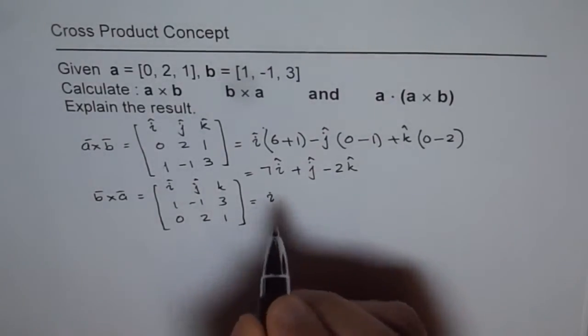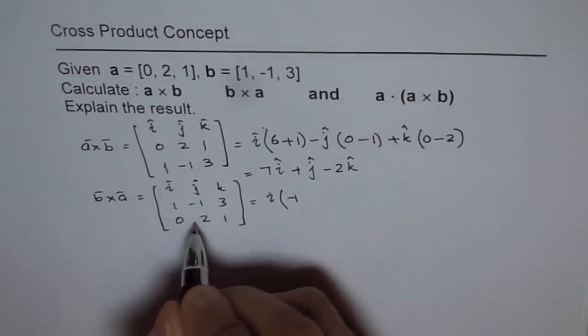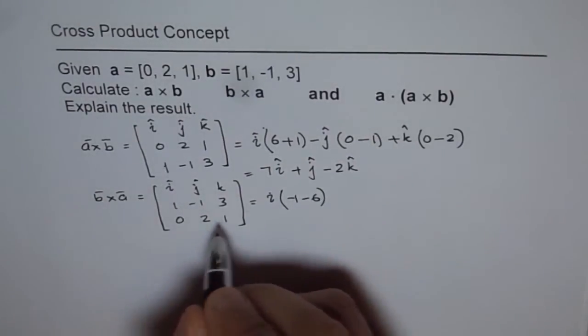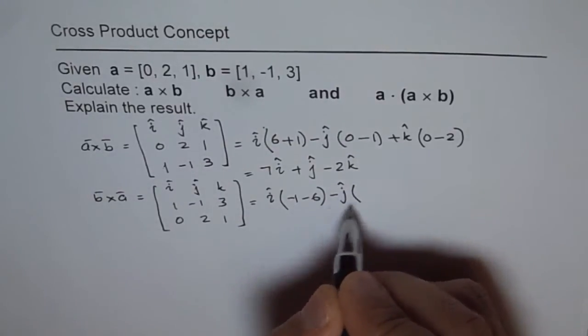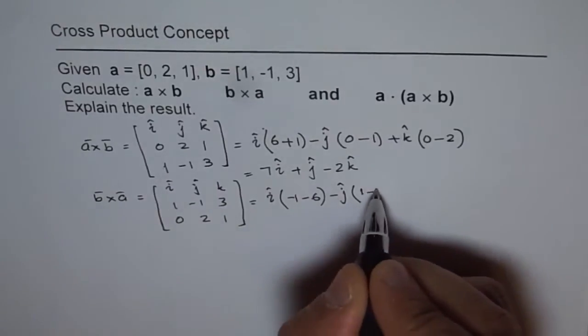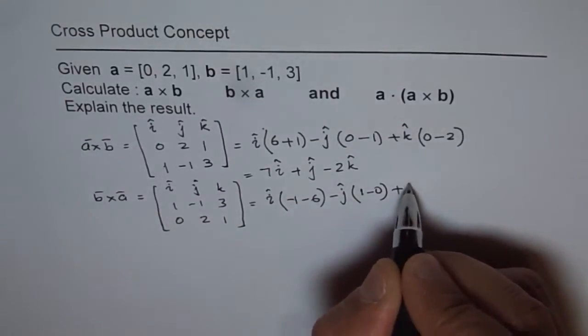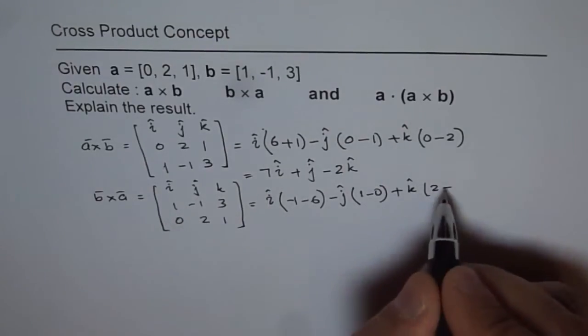This is equal to I times minus 1 minus 6 minus vector J, 1 minus 0 plus vector K, 2 minus 0.